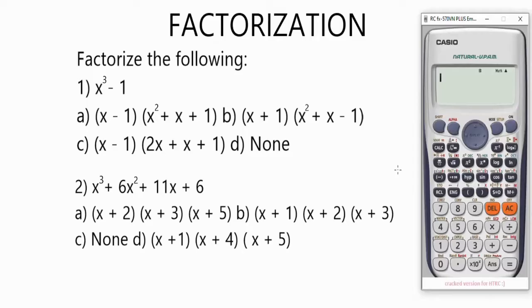use the stored value on this calculator, which is 2, to simplify the question. We have x³ (Alpha X, Shift x²), plus 6x² (Alpha X, x²), plus 11x (Alpha X), plus 6. Let's press equals and see what we're going to have as the value.